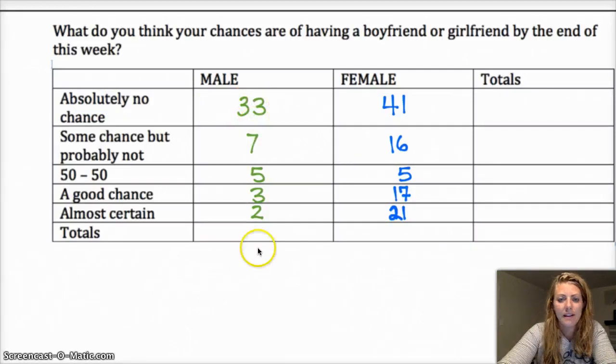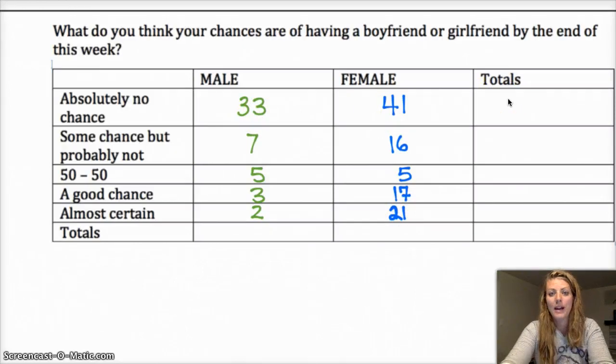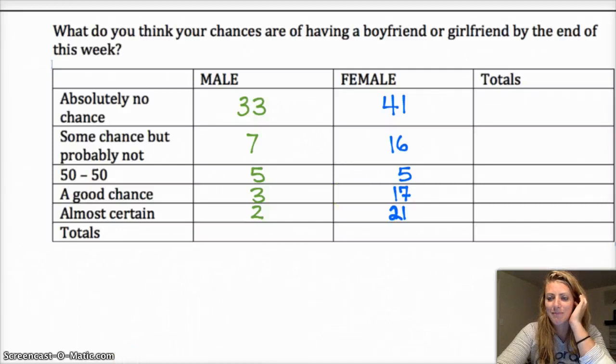And then if you add up all of the male numbers, you would get the total number of males who are in the study. Add all of these up, you'd get the total number of females in the study. If you add it across, that would get you the total number of people who had absolutely no chance. So that's an important piece of the puzzle there.